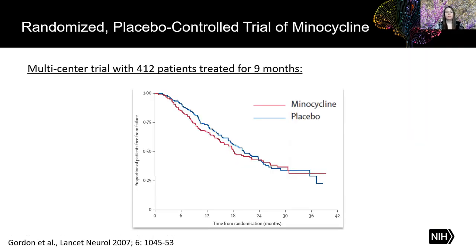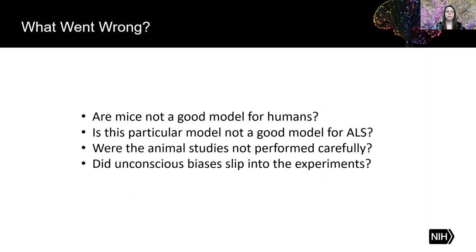Through these exciting results, NINDS funded a clinical trial of minocycline in human ALS patients — a multi-center placebo-controlled trial with 412 patients over nine months. However, the patients on minocycline did not improve on a functional rating scale, and they did not improve in freedom from failure, which is like a survival curve where failure is defined as death, tracheostomy, or near total dependence on a ventilator. This raised questions about why the animal studies didn't predict how minocycline would respond in humans. Why did minocycline fail? Were the animal studies not performed carefully, or did unconscious biases slip into the experiment? Keep that in the back of your mind, and we'll return to the minocycline story at the end.